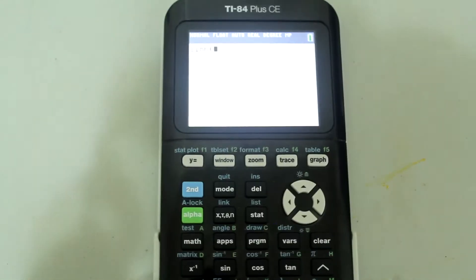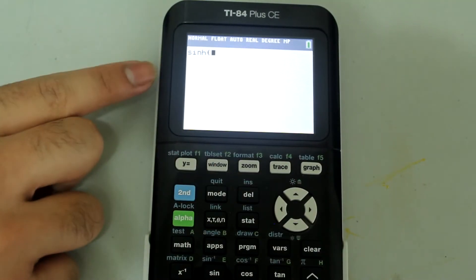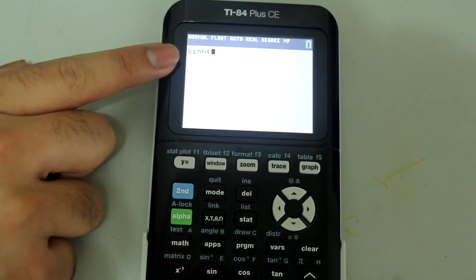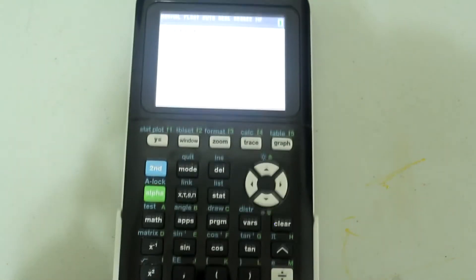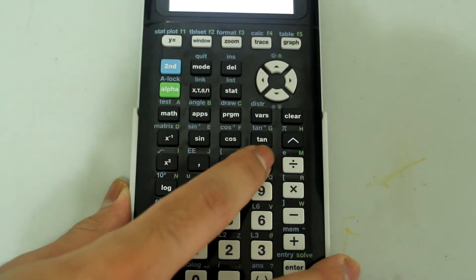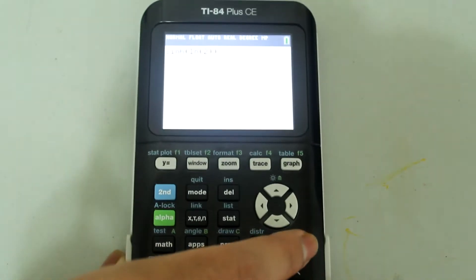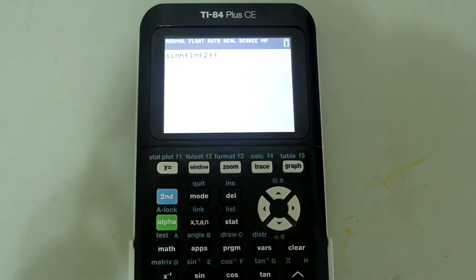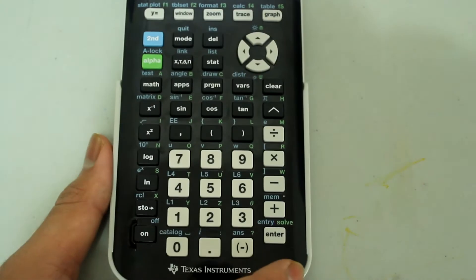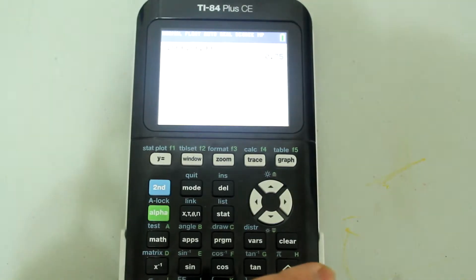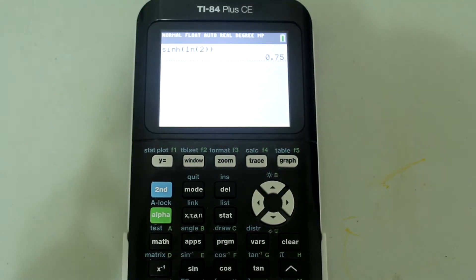Then I'm taken back to the computation screen. On the inside, I'm going to type in natural log of 2, and then close both of these parentheses. The entry looks like this. Press Enter, and I get the answer as 0.75.